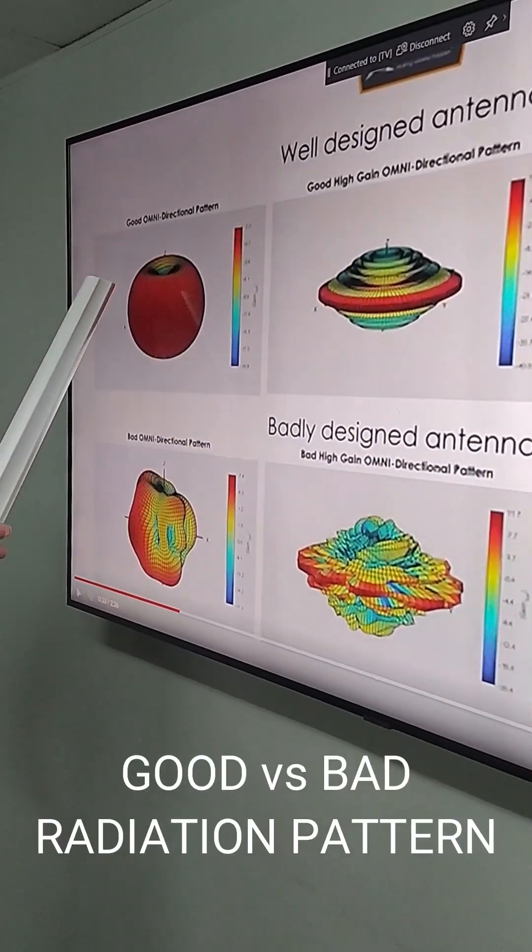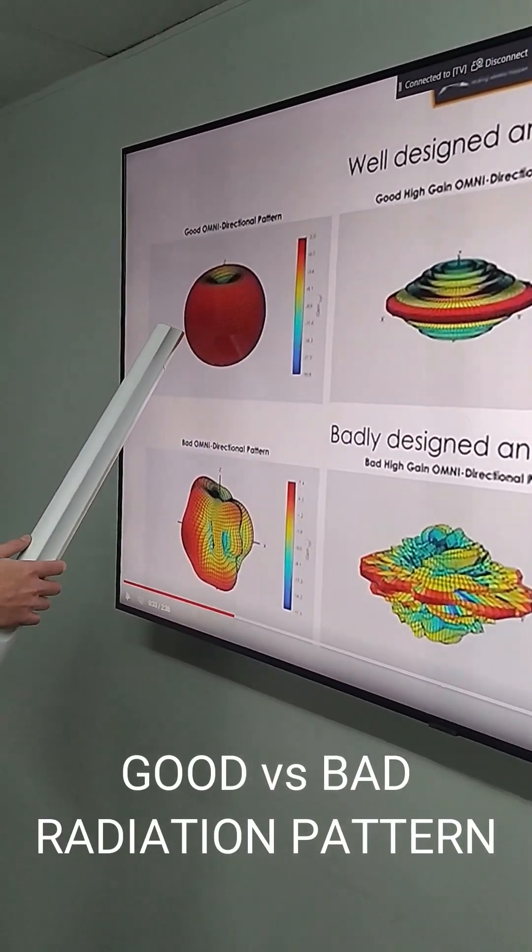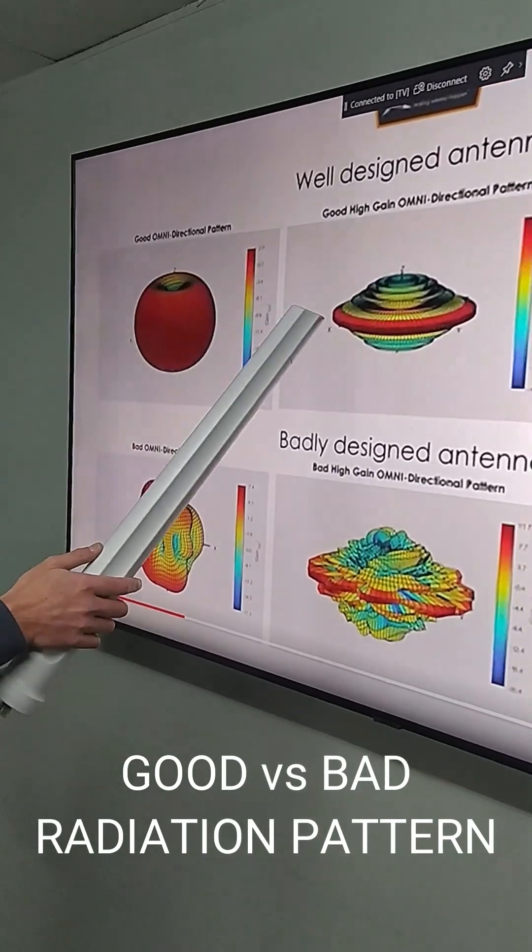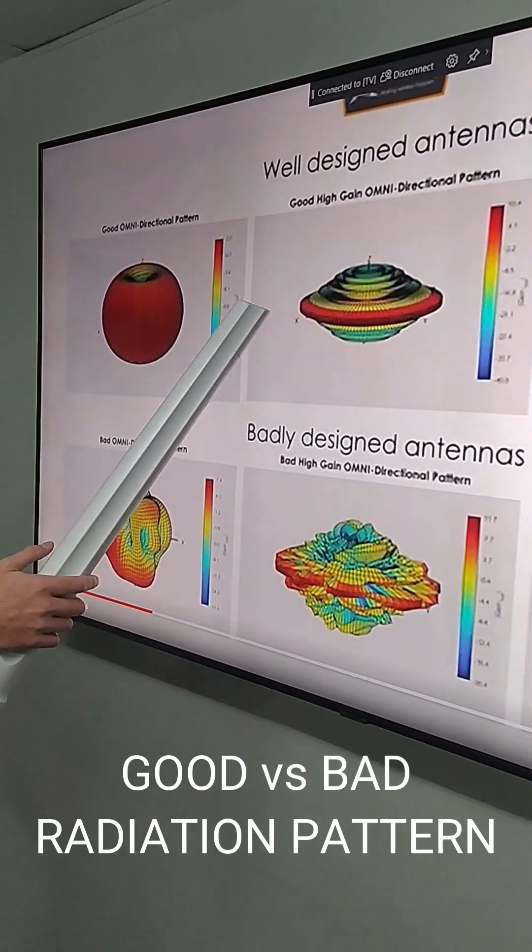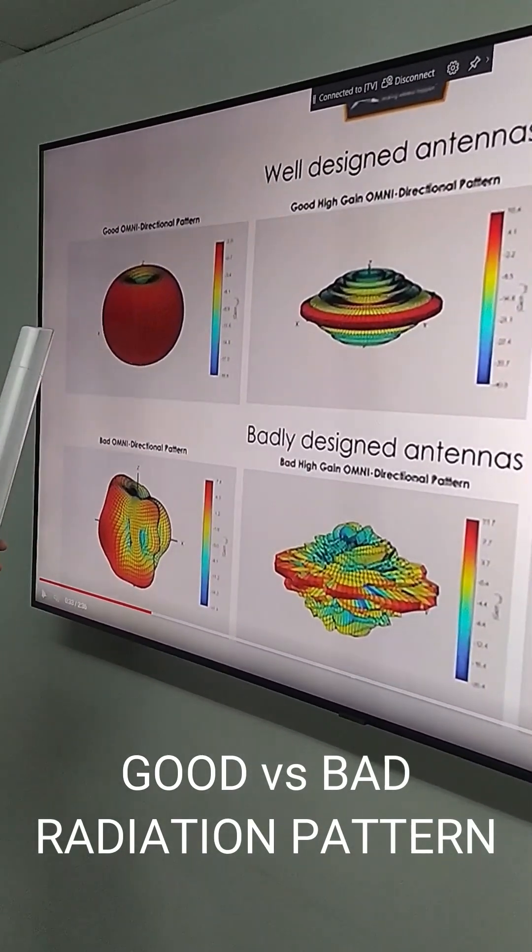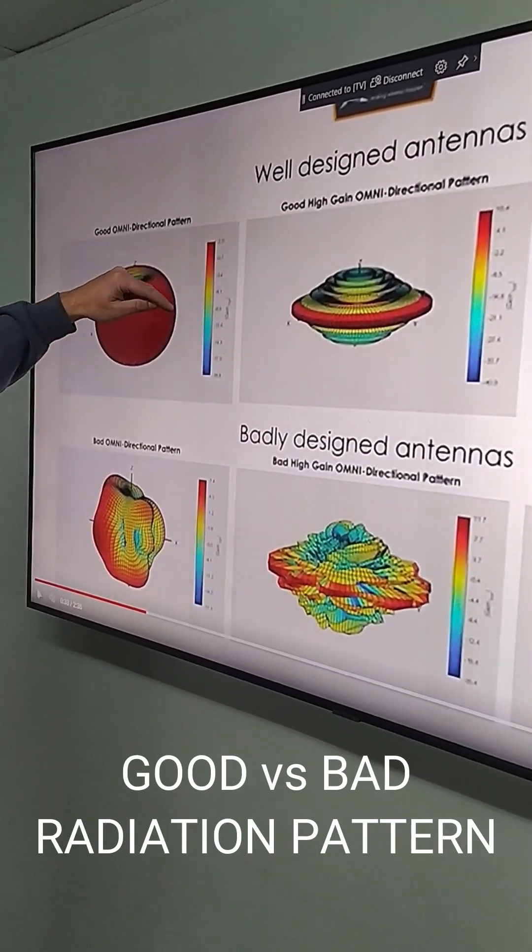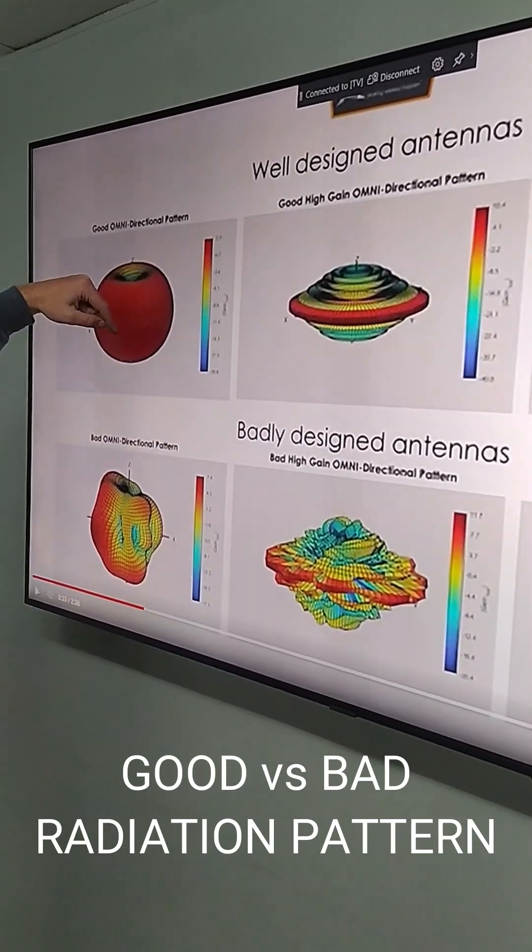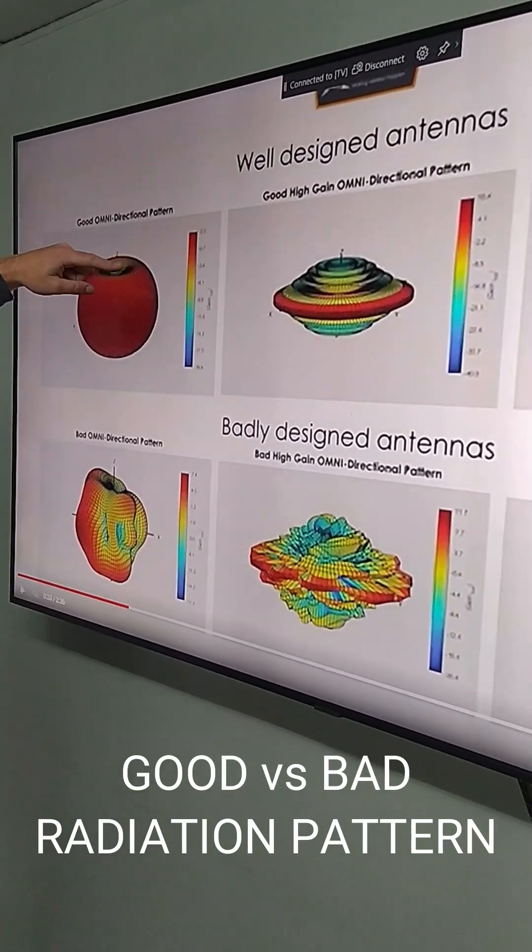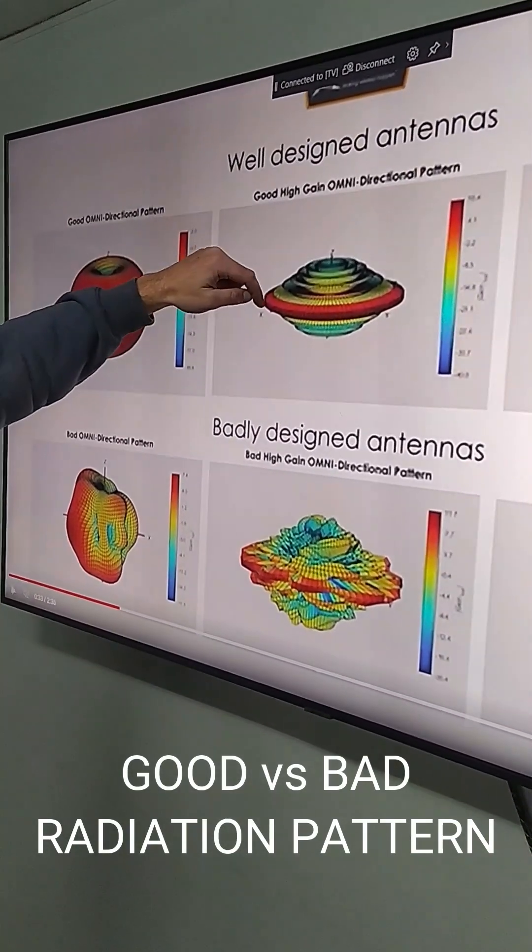Here we have an example of a good radiation pattern for a low gain omni-antenna and a good radiation pattern for a high gain omni-antenna. The reason that they're good is because you can see that the energy is radiated evenly everywhere on the horizon for this antenna in 360 degrees around, and it's similar for this antenna.